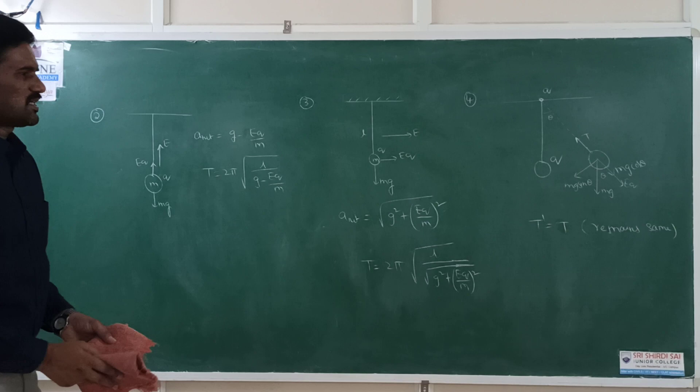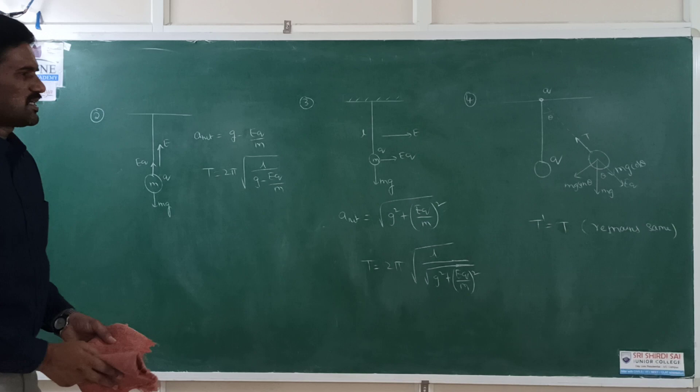So the presence of the two identical charges at the point of suspension and the bob does not affect the time period of the simple pendulum. Those are the cases of how the electric field affects the time period of a simple pendulum.